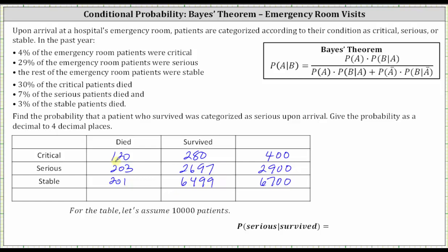Now let's total the columns. 120 plus 203 plus 201 equals 524. 280 plus 2,697 plus 6,499 equals 9,476. Totaling the last row and the last column both give us 10,000. Now we have all the information we need to determine the probability a patient was classified as serious given the patient survived.